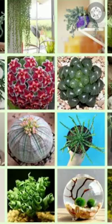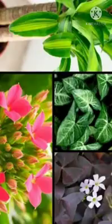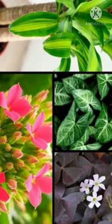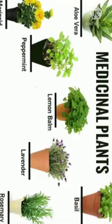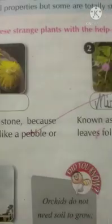Earth is home to more than 2,98,000 species of plants. Some plants produce beautiful and pleasant-smelling flowers. Some produce nutrient-rich fruit. Some have medicinal properties, but some are totally very strange. Today we will discuss about strange plants.